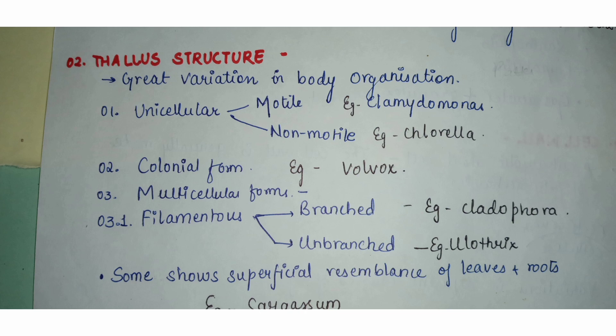Cladophora is a very good example of the branched filamentous form. The unbranched form does not give rise to any small side filaments. The fourth type is colonial forms, where unicellular or multicellular algal forms combine together and coordinate their vegetative and reproductive functions. Volvox is a very nice example of this.